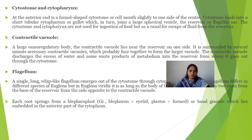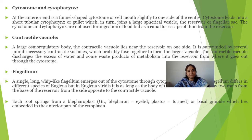At the anterior end, there is a funnel-shaped cytostome, or cell mouth, positioned slightly to one side of the centre. The cytostome leads into a short tubular cytopharynx, also called the gullet. This in turn joins the large spherical vesicle known as the reservoir of the flagellar sac. The cytostome and cytopharynx are not used for ingestion of food but as a canal for escape of fluid from the reservoir.